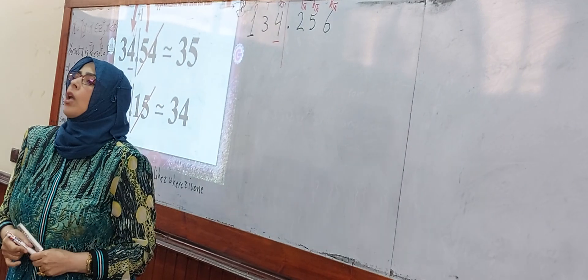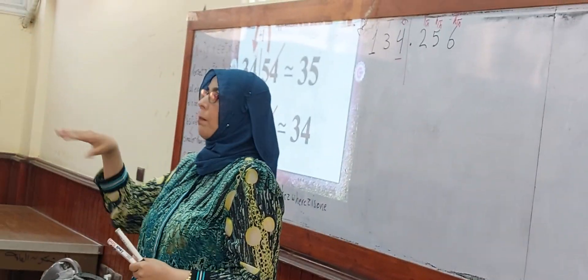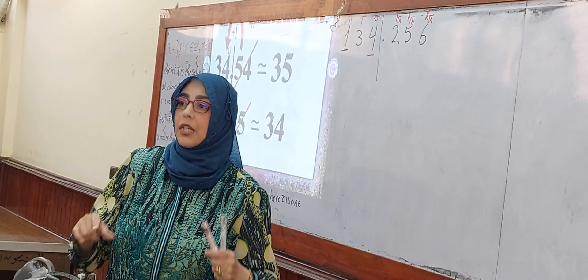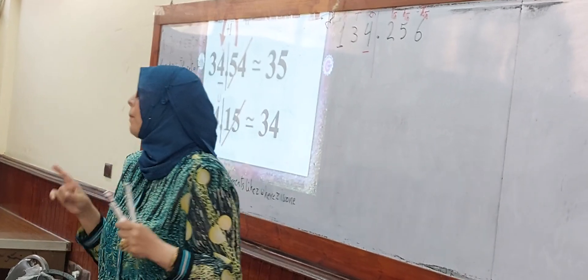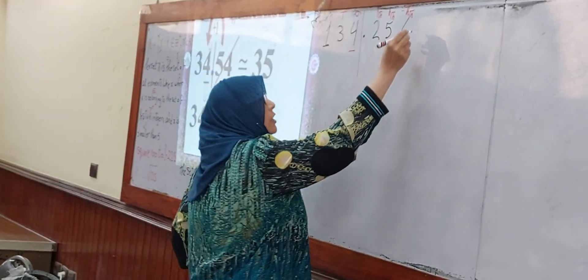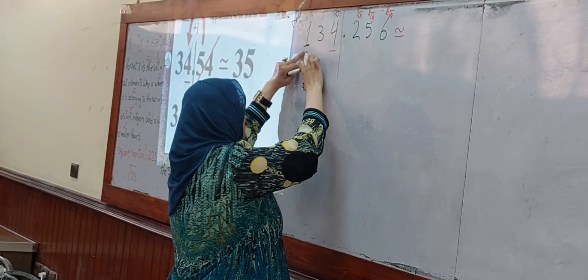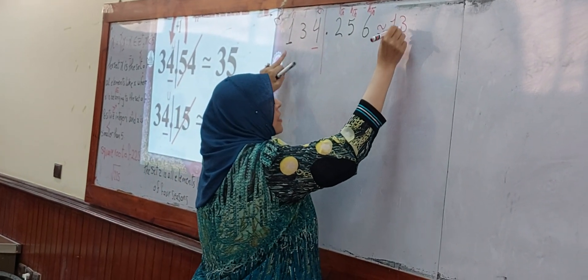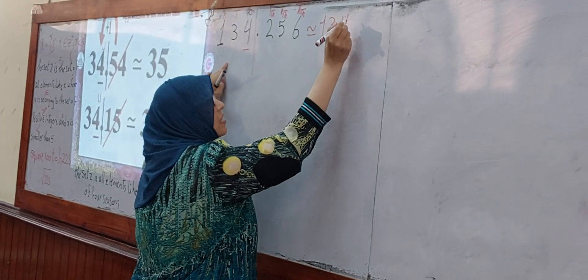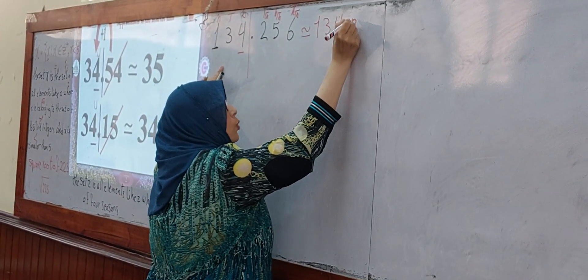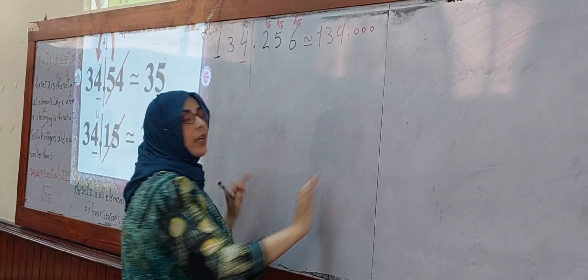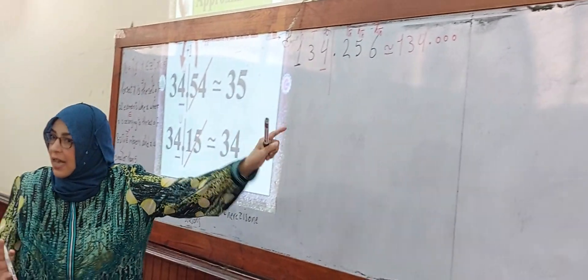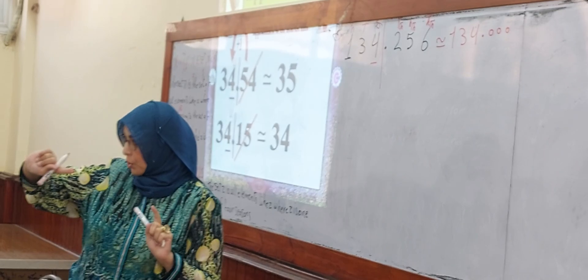Replace all digits after the wall by zeros. Approximately equals 134.0000. Keep it now. Number two.